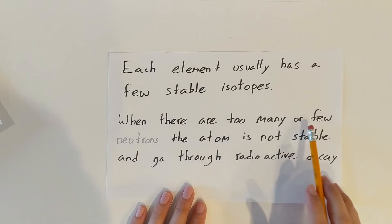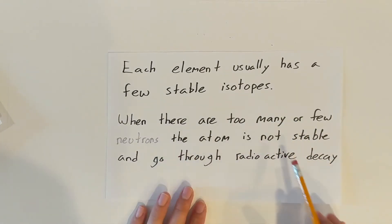When there are too many or too few neutrons, the atom is not stable and it will go through what we call radioactive decay. We'll learn about that in the next couple of weeks.